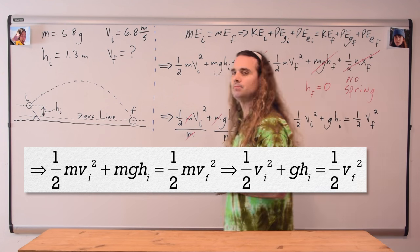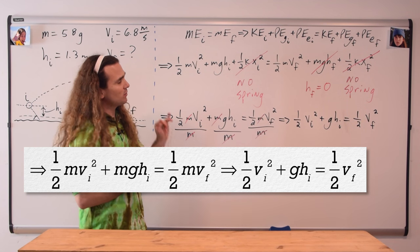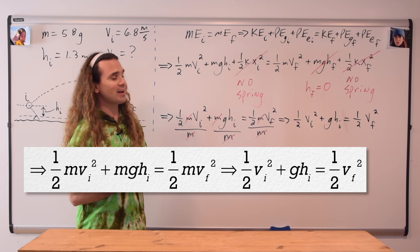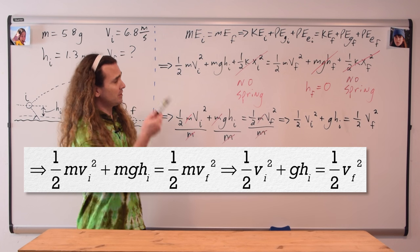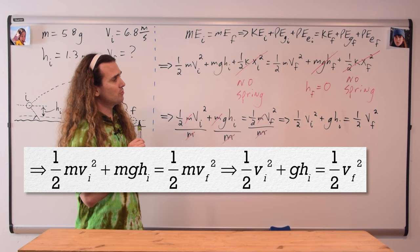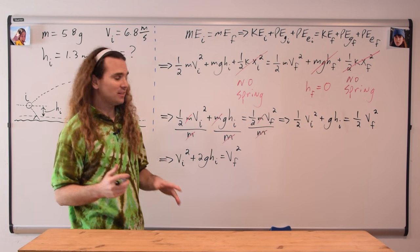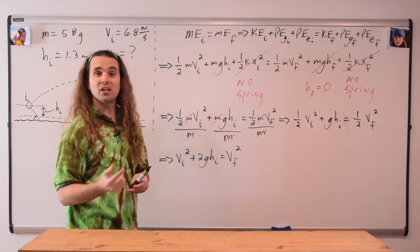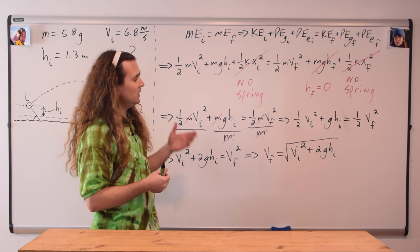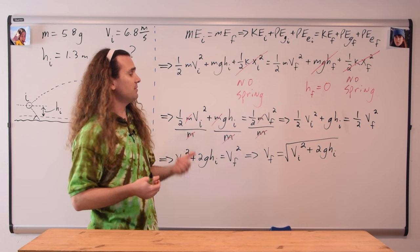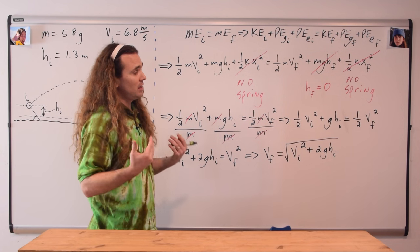Everybody brought masks to the party — we can be equitable, we can take the mass from everyone. We're left with one half times velocity initial squared plus the acceleration due to gravity times the height initial equals one half times velocity final squared. We can solve for the final velocity by multiplying through the whole equation by two and taking the square root of the whole equation, moving velocity final over to the left side. We get velocity final equals the square root of the quantity velocity initial squared plus two times the acceleration due to gravity times the vertical height initial.